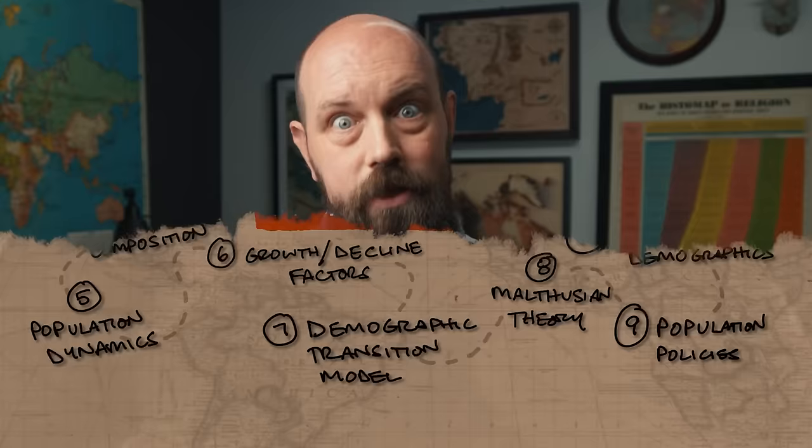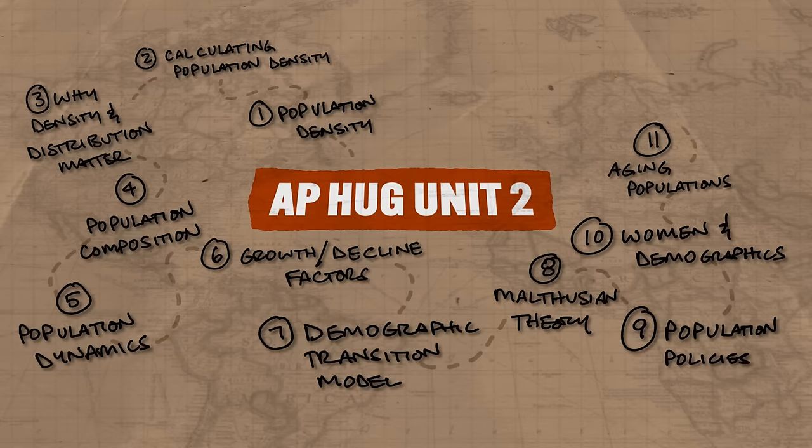Now let's get to our last major section: migration. First, let's clarify two terms that sound similar but are not. Immigration refers to people coming into a country, while emigration refers to people leaving a country. Immigration in, emigration out. Why do people migrate? They migrate because they experience push or pull factors.